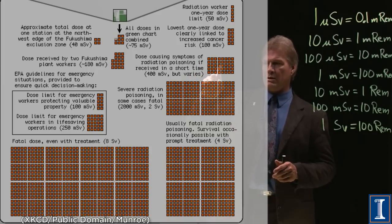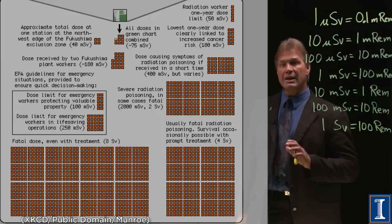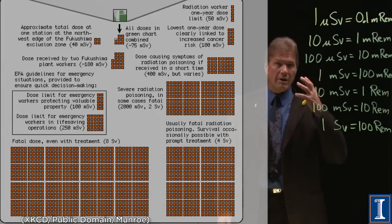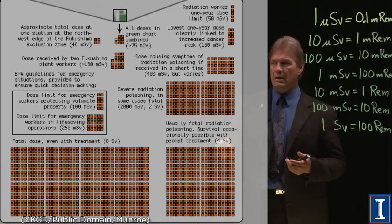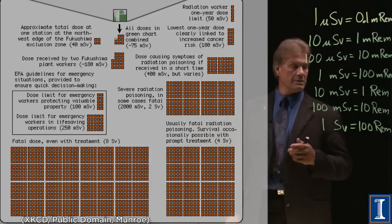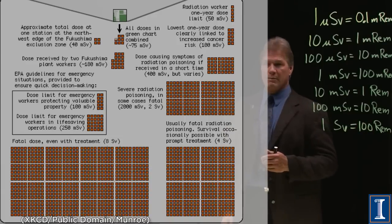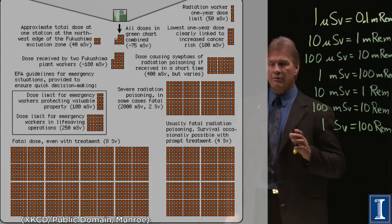If you get 4 times that, if you get 40 rem, you can start having radiation sickness, hair loss, redness, nausea. And if you go up here to 2 sieverts, which is 200 rem, you're definitely in this range of radiation sickness and radiation poisoning. You're going to need medical care.